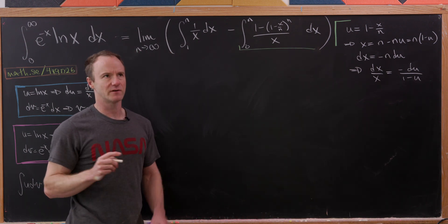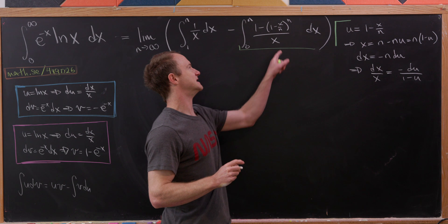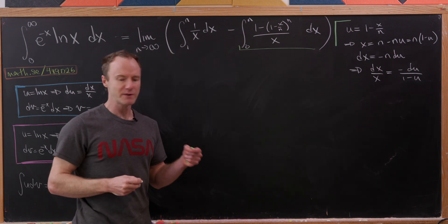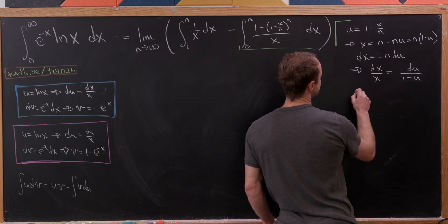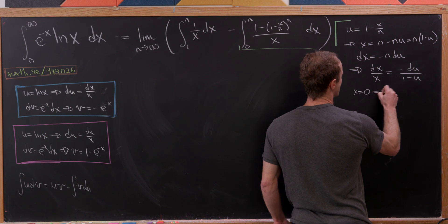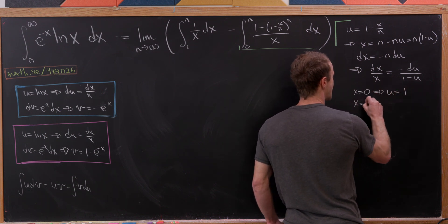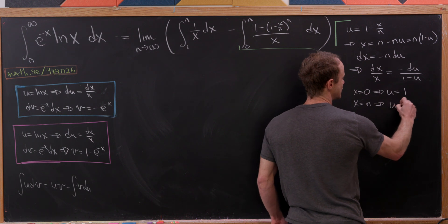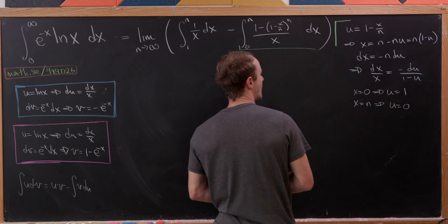Now what about the bounds of integration? When x equals zero, that clearly makes u equal to one. And when x equals n, that tells us u equals zero.